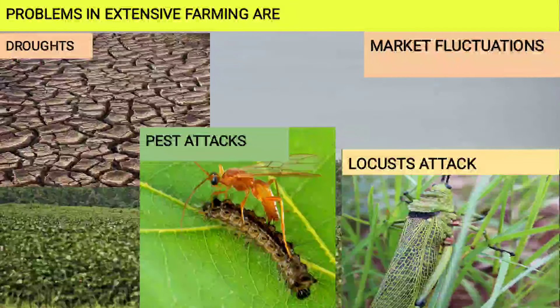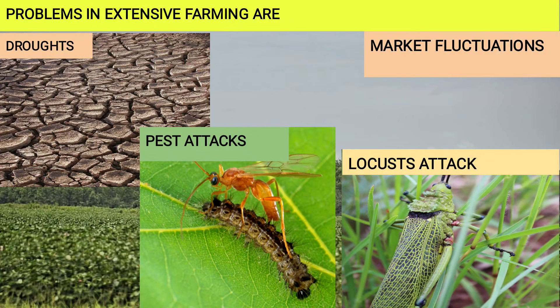There are some problems in extensive farming. First is drought — if it does not rain, there is no water and crops will not grow. Second is pest attacks, which can destroy the crops. Third is locust attack — a particular type of insect that can attack the crops. Fourth is market fluctuations: the market may demand some other crop, but you have already produced a different one. These problems will arise in extensive farming.